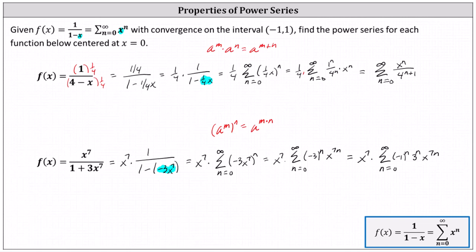So the final power series is the sum from n equals zero to infinity of negative one to the power of n times three to the power of n times x to the power of seven n plus seven. We could factor seven n plus seven as seven times the quantity n plus one, but we'll leave it in this form. I hope you found this helpful.